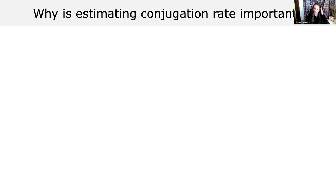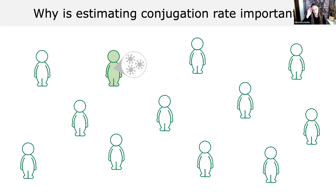I want to thank everybody that was on this project. It was really a close collaboration with my advisor Ben Kerr, also with Ava's TOPS lab at the University of Idaho and Ivana Bozik's lab at the University of Washington. I'm going to give a little zoom out about why estimating conjugation rates are important.